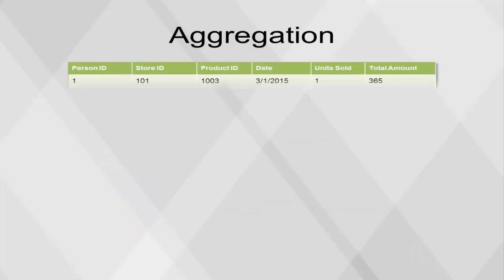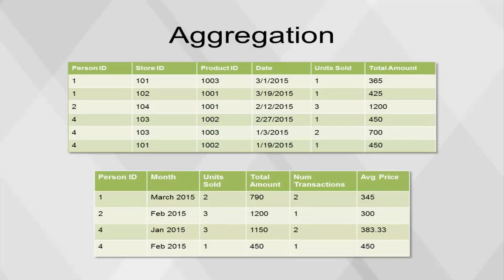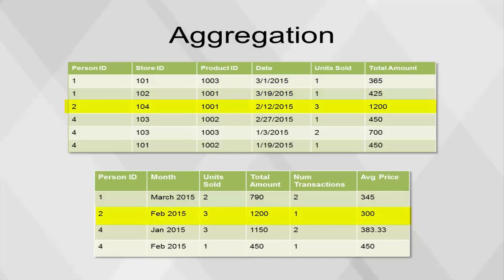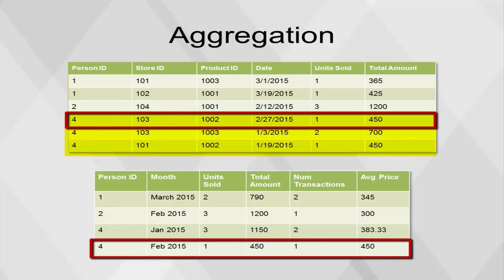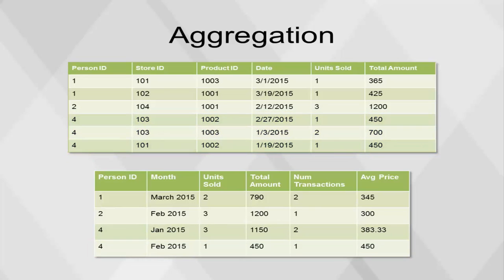The final type of questions that can be asked involve combinations of multiple dimensions. One of the most common combinations is to aggregate by a date dimension along with another dimension. For this calculation, each combination of the dimensions chosen for grouping are performed. In the transaction table, there are four such combinations. Transactions for person ID 1 are only in March of 2015. There's only one transaction for person ID 2 occurring in February 2015. And there are three transactions for person ID 4, two occurring in January and one occurring in February of 2015. Within each of these combinations, each of the calculations are performed.